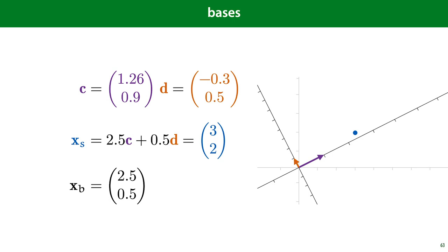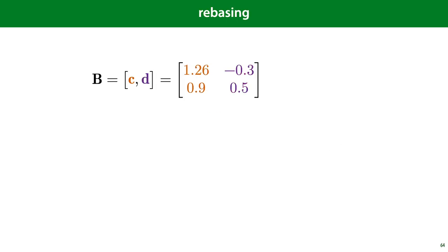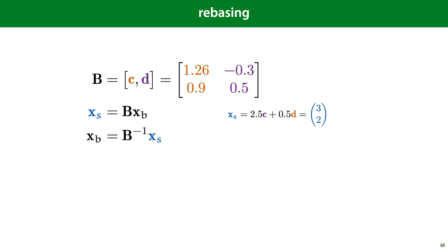What we often do with basis vectors is concatenate them into a matrix — we'll call that B. In this notation, we see c and d in brackets, which we take as a concatenation operation. The result is a matrix whose columns are the vectors c and d. The operation of getting from the non-standard basis to the standard basis can be expressed by matrix multiplication. To go the other way — from the standard basis to the non-standard basis — we simply multiply by the inverse of B.